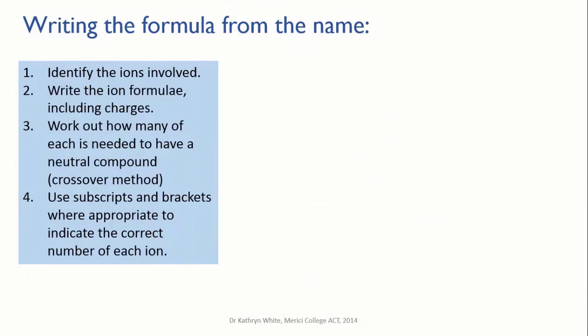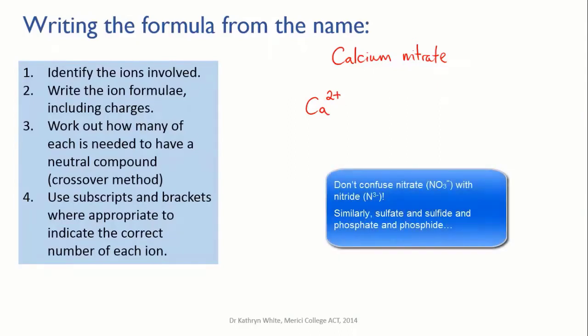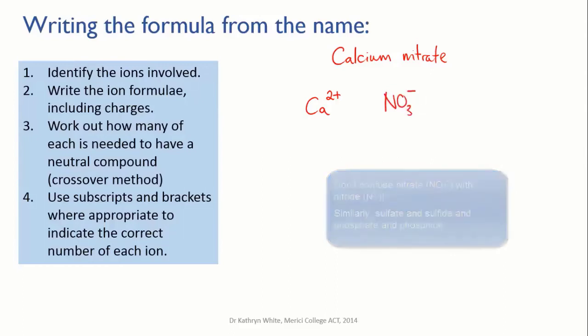Let's try another example. Let's try and write the formula for calcium nitrate. First we work out the ion formulae. Calcium is the element calcium. It's in group two, so it's going to have a charge of 2+. Nitrate—now don't get this confused with nitride, which is the nitrogen monatomic ion. Nitrate with the -ate, that indicates that it's one of your polyatomic ions. You should remember that its formula is NO3 with a charge of 1-.